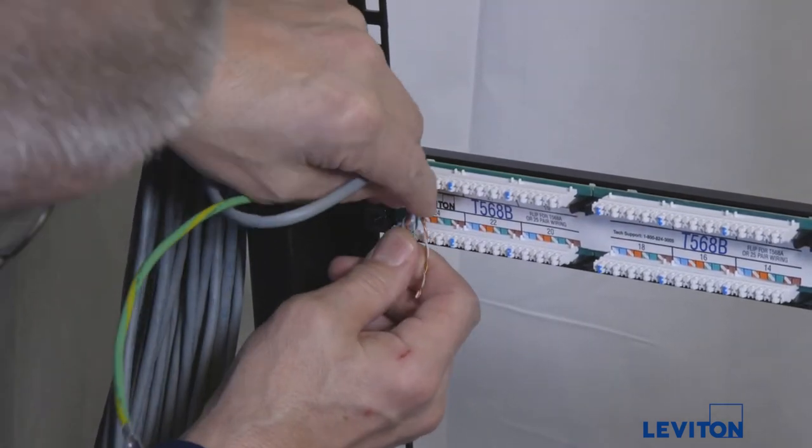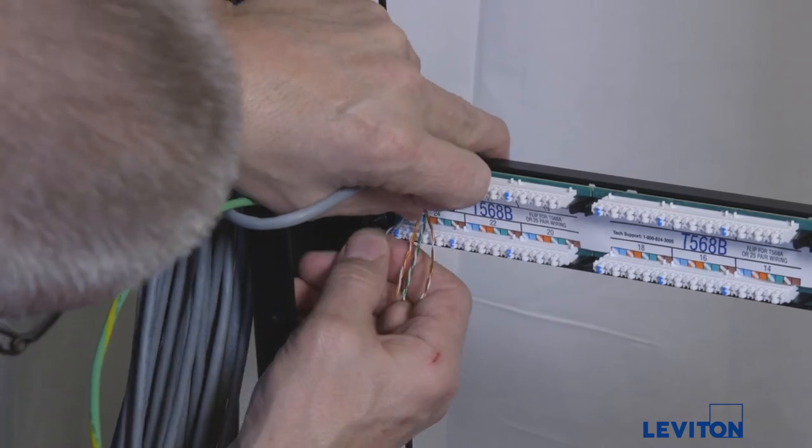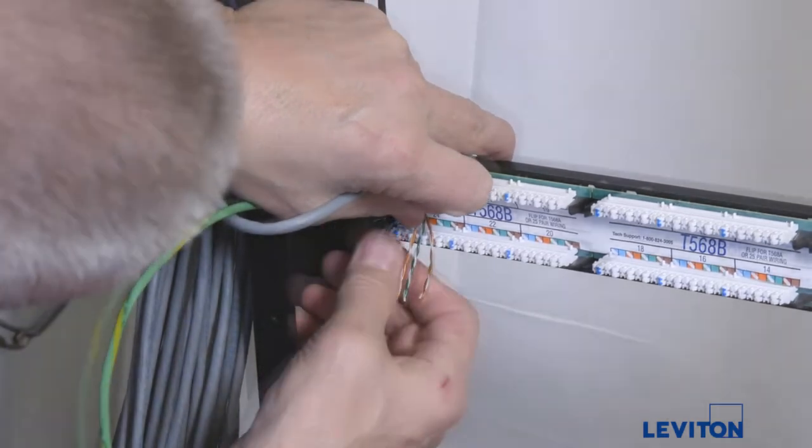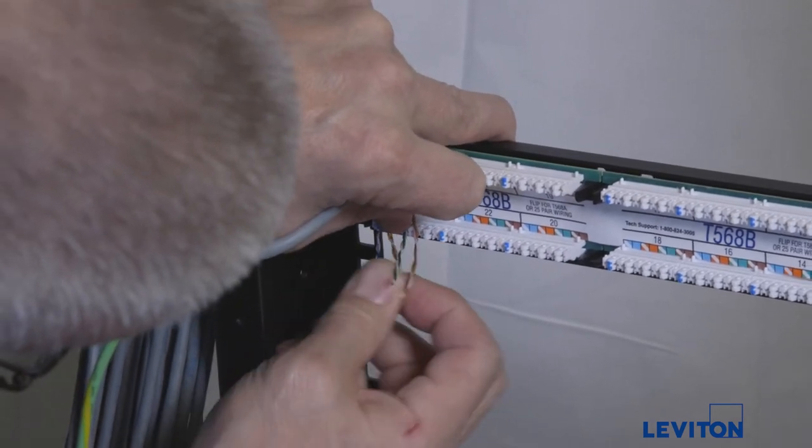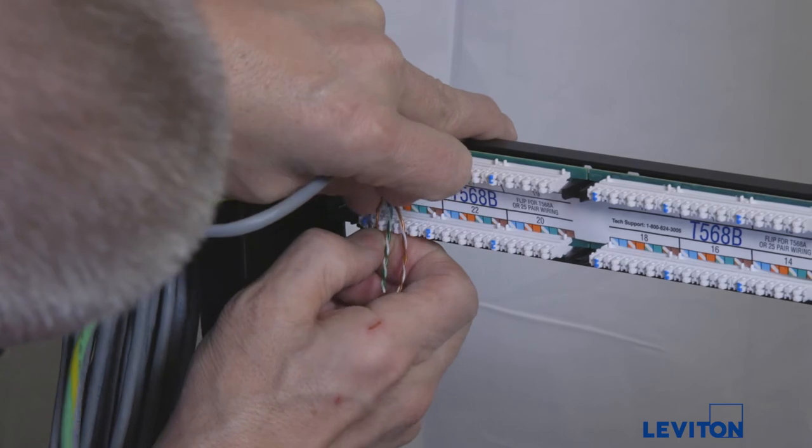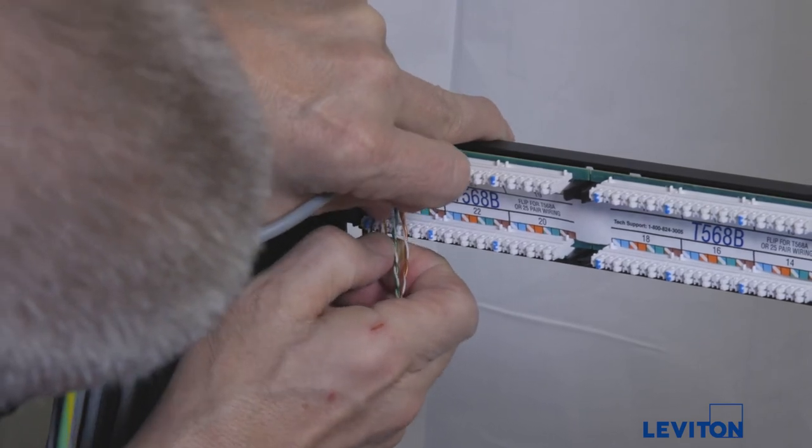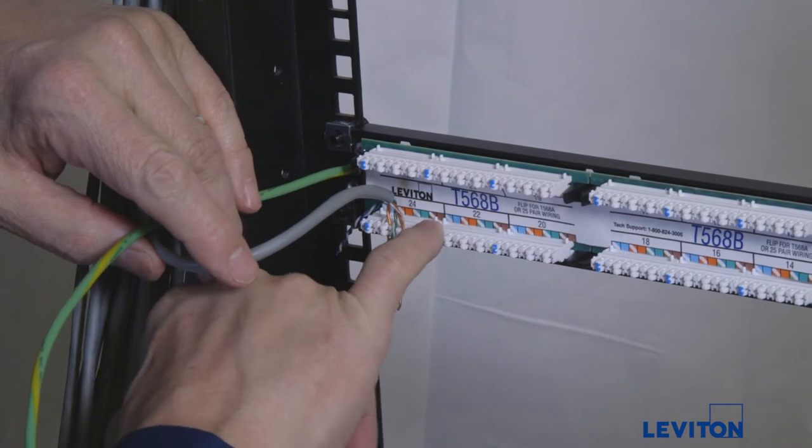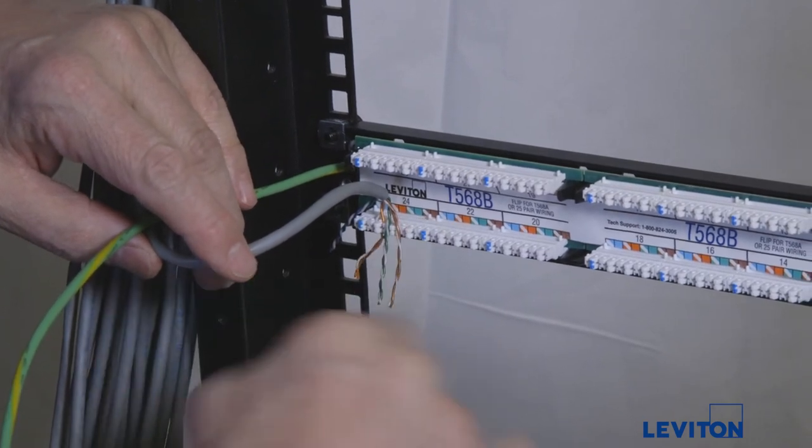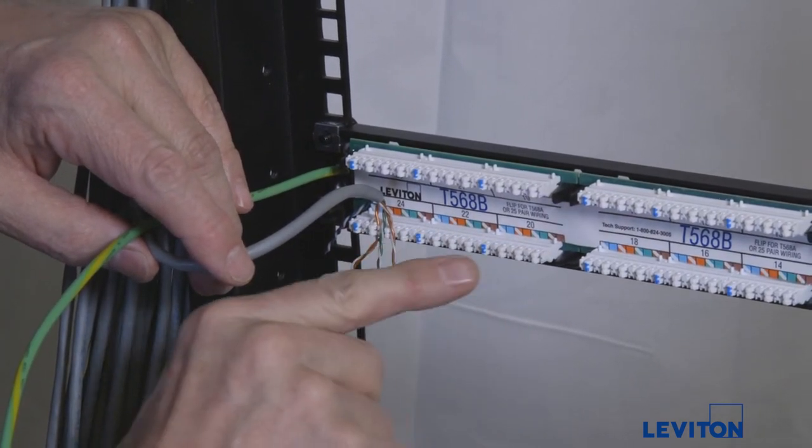Position the wires in port 24 following the diagram on the wiring card. Use the pair separation towers to open and seat the orange pair first. Don't completely untwist the wires. Maintain the twist approximately a half an inch from the termination point. Position the white wire to the left and the orange wire to the right.